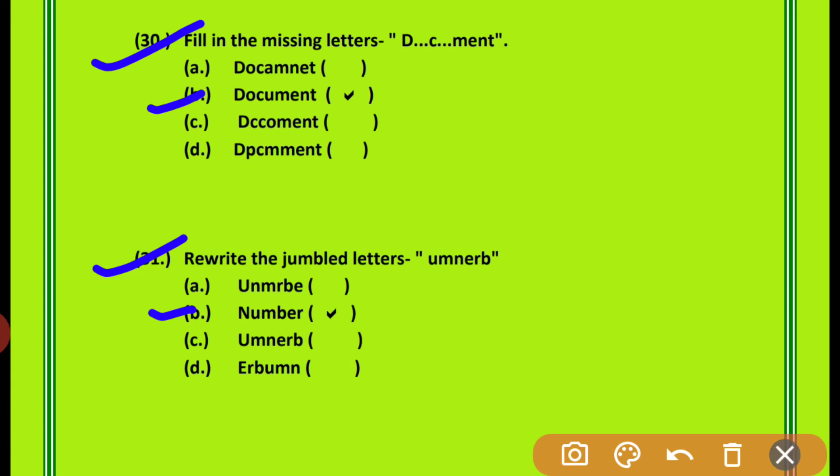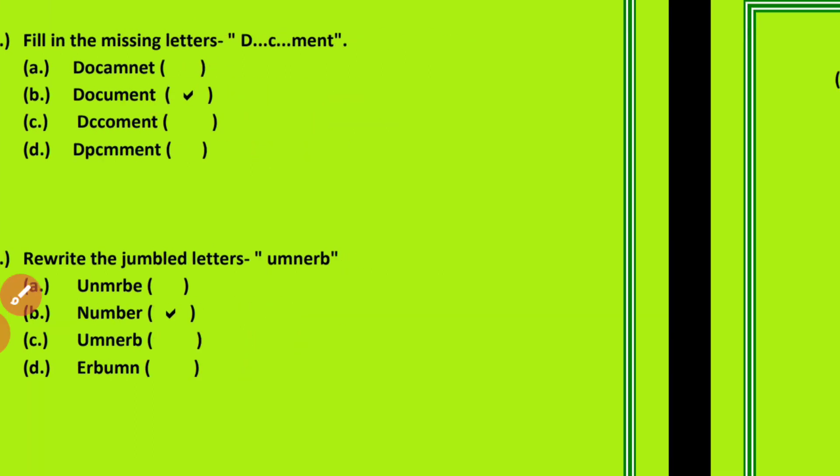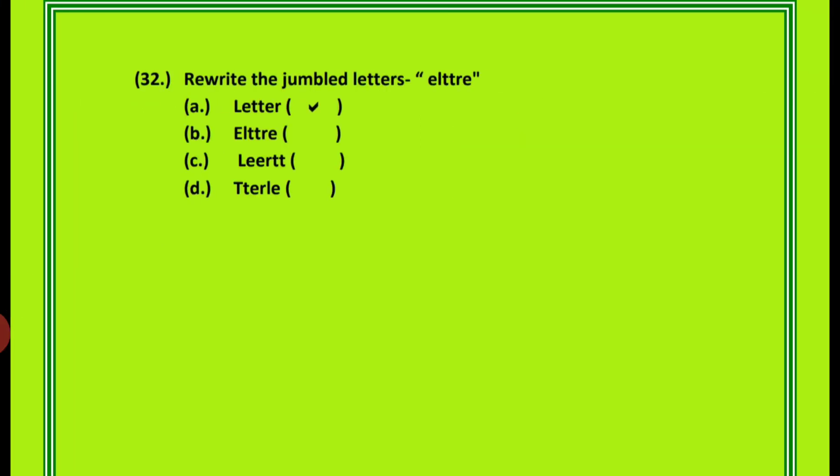Question 32: Rewrite the jumbled letters — E-L-T-T-R-E. इस spelling को meaningful word में convert करना है। यह किसकी spelling है? Letter — L-E-T-T-E-R. Option A is correct.